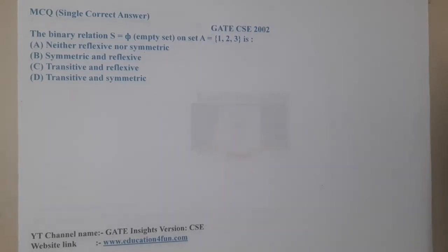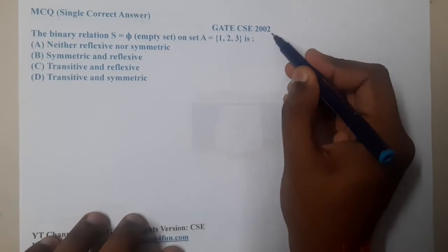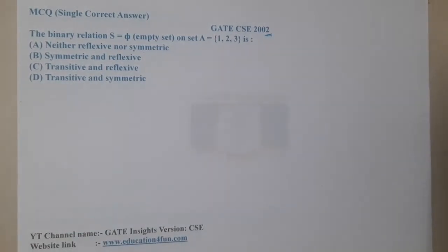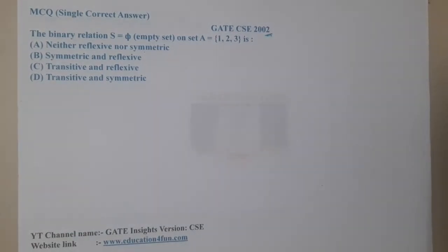Hello guys, we are back with our next lecture. In this lecture, let us go through the next question. This question belongs to GATE CSE 2002. The question is: the binary relation S equals phi, which is nothing but an empty set, on set A equals {1, 2, 3}.